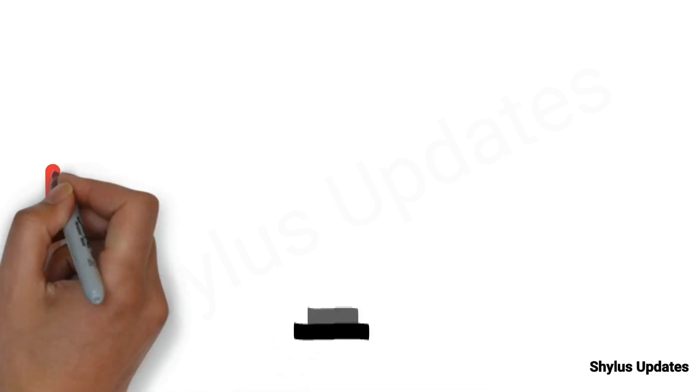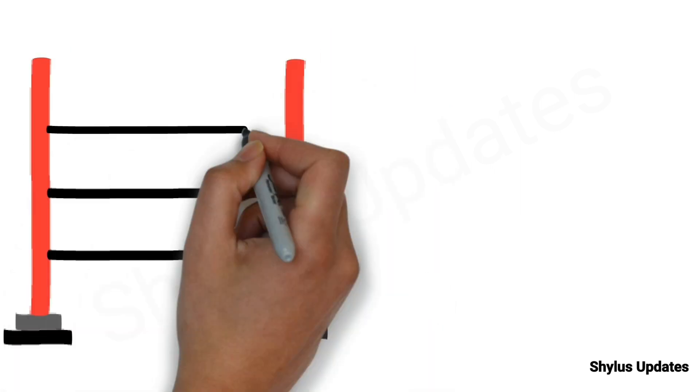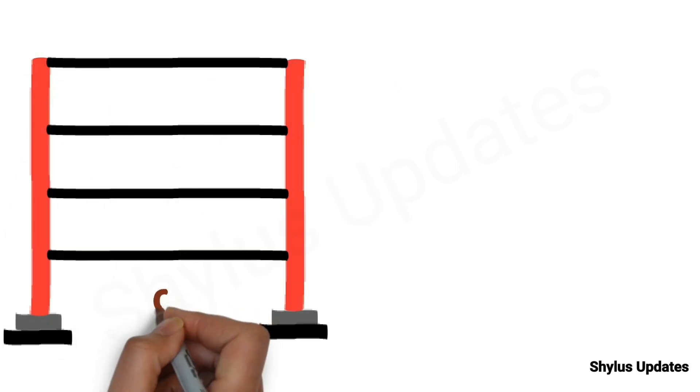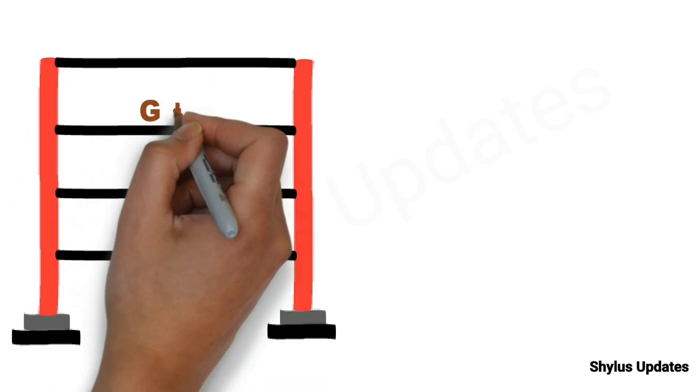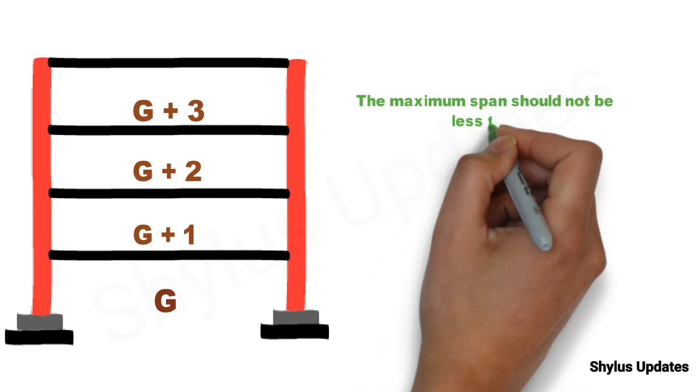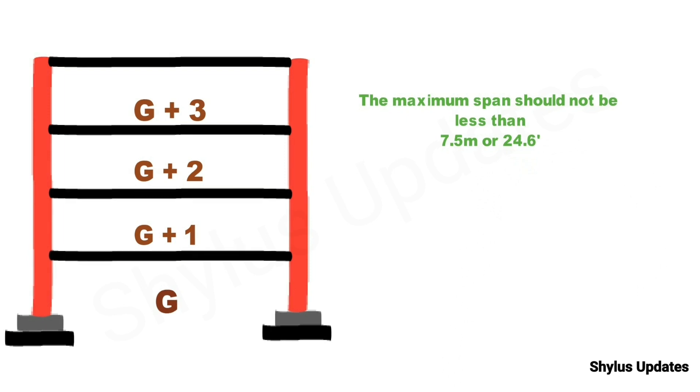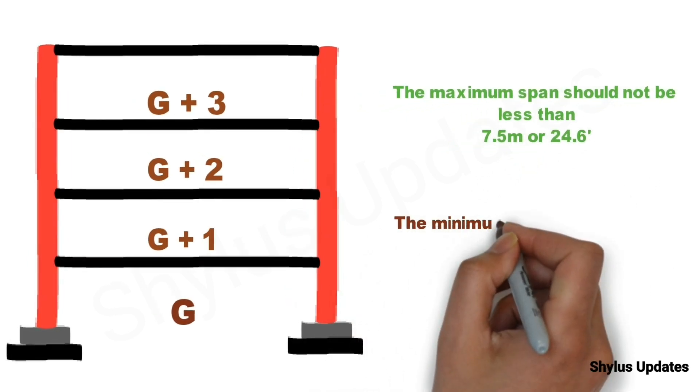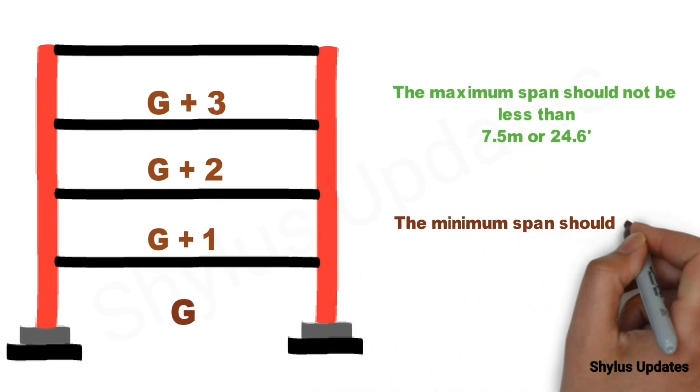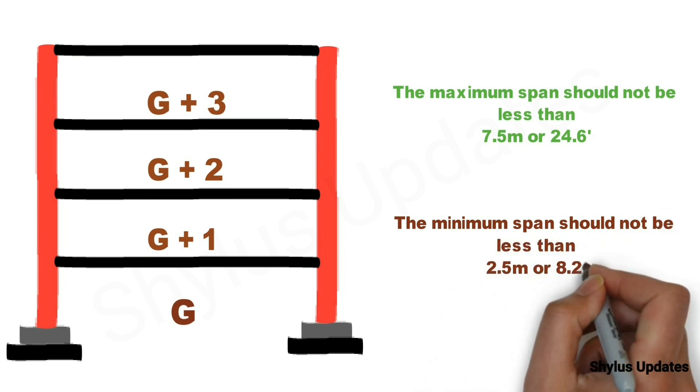Now let's see the size of column for a residential building, number of bars to be provided, and at what size the diameter of bars should be provided. The maximum span should not be less than 7.5 meter or 24.6 feet. The minimum span should not be less than 2.5 meter or 8.2 feet.